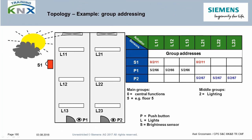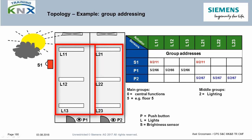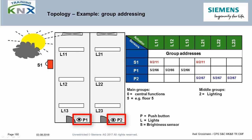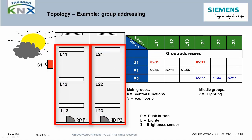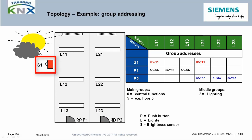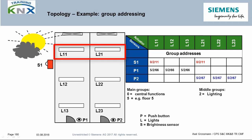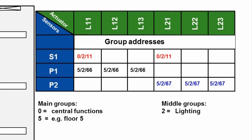Let's look at an example for the communication of group telegrams in different line constellations. The starting point is a small project with six switching actuator channels, three per room. The three channels of each room are switched manually and centrally via a single push button. A brightness sensor automatically switches off only the window lighting — lamps L11 and L21 — when it becomes brighter than a given threshold. The controlling group addresses for each function are listed in a table showing the sensor-actuator links.